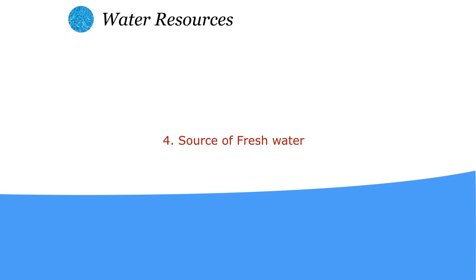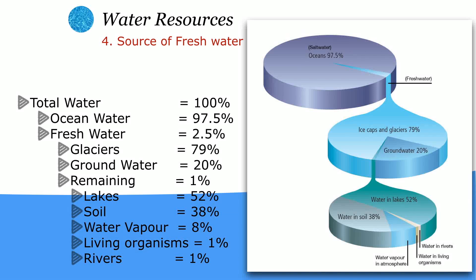We have plenty of water on the earth, but almost 97.5 percent of water is salt water available in oceans. We have only 2.5 percent of fresh water. This fresh water is available in glaciers or ice caps up to 79 percent, and up to 20 percent of fresh water is available as ground water. On the surface there is only 1 percent water available, mostly 52 percent in lakes, 38 percent in soil, and the remaining as water vapor, living organisms, and rivers, which contain only 1 percent of the total water.